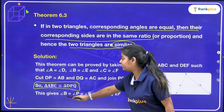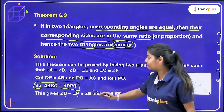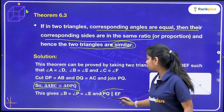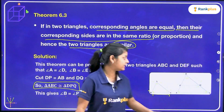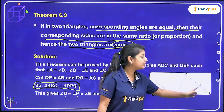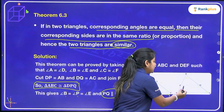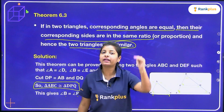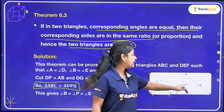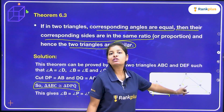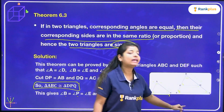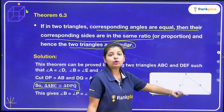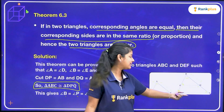We found that angle B is equal to angle P, and angle P is equal to angle E. So we can say PQ is parallel to EF, because angle B is equal to angle E. We know that if corresponding angles are equal, lines will be parallel. So PQ is parallel to EF — sorted, simple, clear.